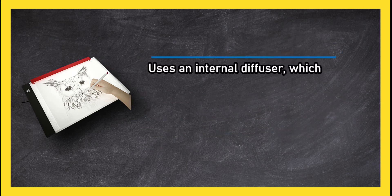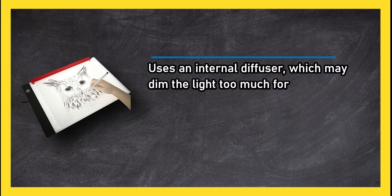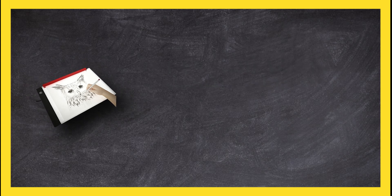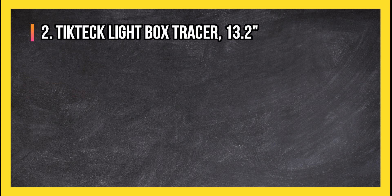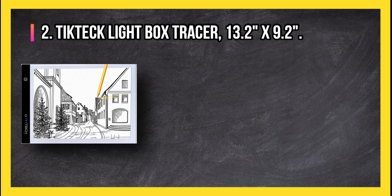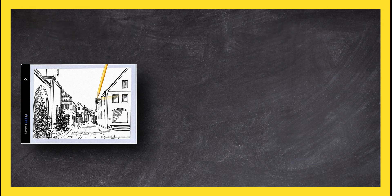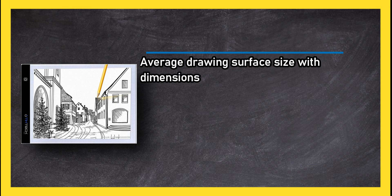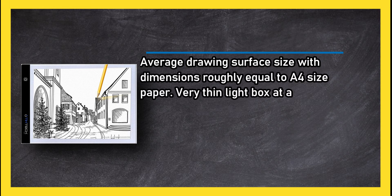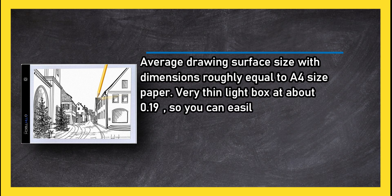At number two: Tikteck Light Box Tracer, 13.2 inches by 9.2 inches. Average drawing surface size with dimensions roughly equal to A4 size paper. Very thin light box at about 0.19 inches, so you can easily carry it with you wherever you need to use it.